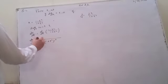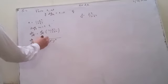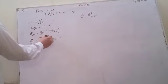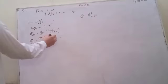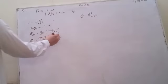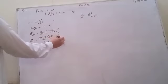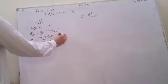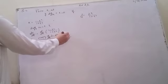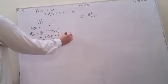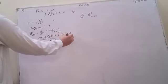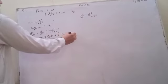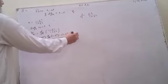Applying the quotient rule: 1 plus t square as it is, into derivative of 1 minus t square, minus 1 minus t square into derivative of 1 plus t square, all divided by 1 plus t square squared.